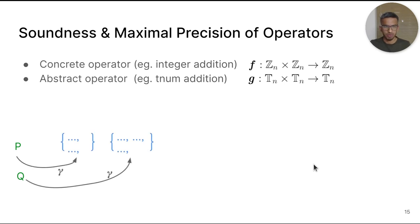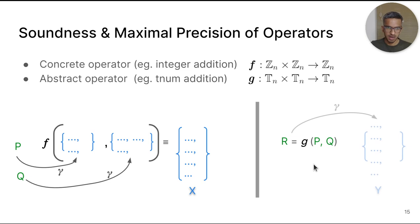Let's say we have two TNUMs P and Q. We first concretize them to obtain the concrete set of integers they abstract. Then we perform the concrete operation F on the members of these two sets pairwise to obtain a resultant set. Let's call this set X. Next, consider the abstract operator G. It produces a TNUM R directly from P and Q. We take this result TNUM R and concretize it. Suppose we call this set Y. The soundness criteria for the abstract operator G asks, does Y contain X for all input TNUMs P and Q?